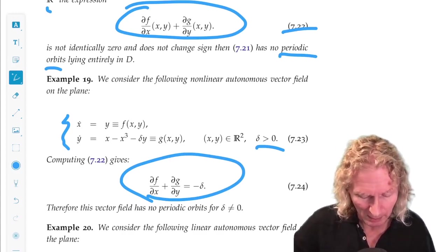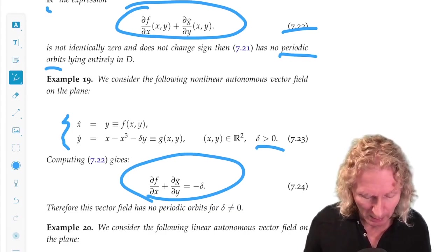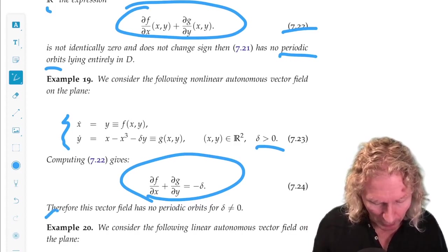Take any, this is constant everywhere. So you could be clever about your choice of region, but this vector field has no periodic orbits.